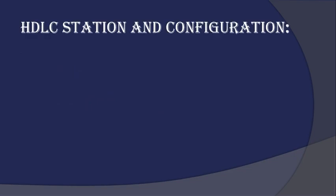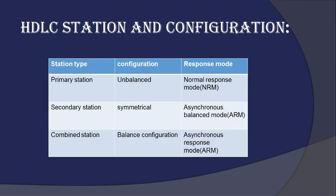Now let us study about HDLC stations and configuration. There are three basic stations: primary, secondary, and combined. The primary station is the most important station, used for controlling all other stations on the link. It is responsible for organizing data flow on the link and takes care of error recovery at the data link level. The secondary station is under the control of the primary station. It has no control over the link and can only send response frames when requested by the primary station — it is completely dependent on the primary station.